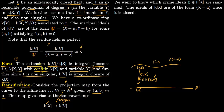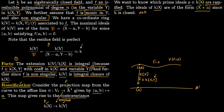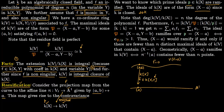For ramification, we want to know which prime ideals p of k[x] are ramified in kV. The prime ideals of k[x] are of the form (x−a) for a in k, since k is algebraically closed. The degree of the extension kV over k[x] is precisely n, the degree of our polynomial f.